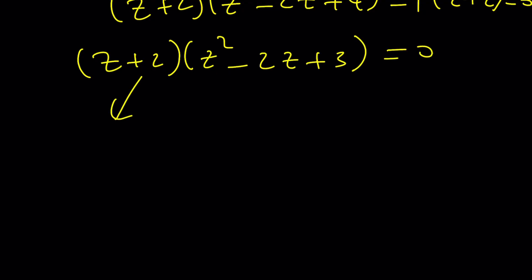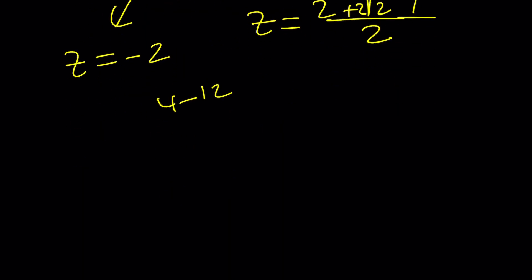Obviously we knew that z equals negative 2 is a solution. And the other solutions come from the quadratic formula: negative b plus minus the square root of b squared, 4 minus 4ac, which is 12. That's going to be like 2 root 2i divided by 2. So that'll be 1 plus minus root 2i.